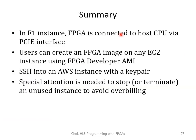Let's summarize this lecture. In the F1 instance, the FPGA is connected to the host CPU via PCIe interface. You can create an FPGA image on any EC2 instance using the FPGA developer AMI — it doesn't need to be an F1 instance; it can be done on an M5 instance as well. You need to SSH into an AWS instance with the key pair, and make sure you keep the key pair in a safe place. Special attention is needed to stop or terminate an unused instance to avoid overbilling. Please don't forget to stop the instance you just used when you're done with today's class.